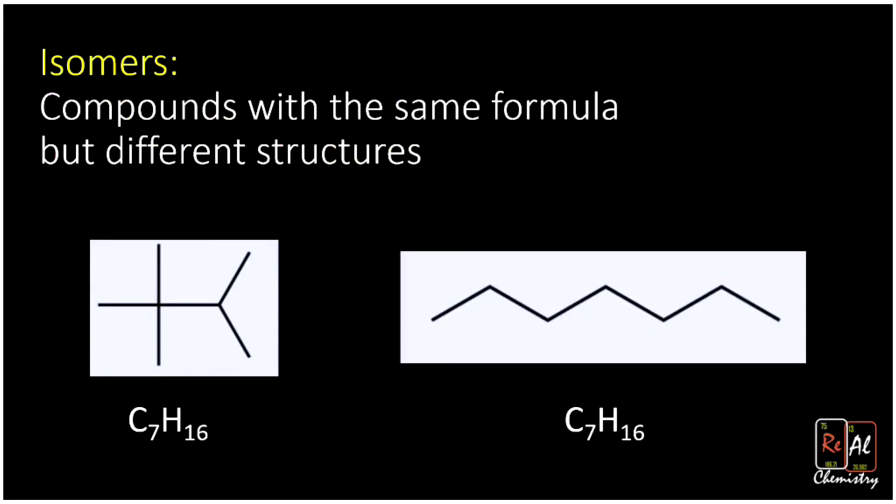First up, what's an isomer? Well, isomers are compounds with the same formula, but different structures. So here we have C7H16. And on the right, we also have C7H16. Both of them have the same number of carbons and the same number of hydrogens. They have identical molecular formulas.